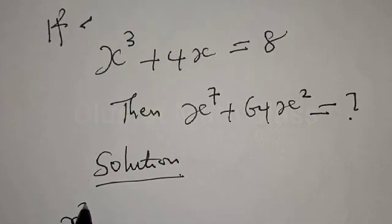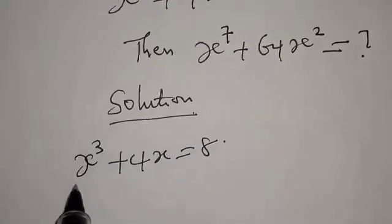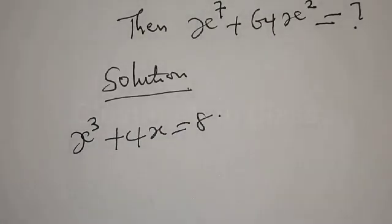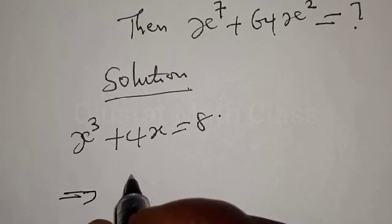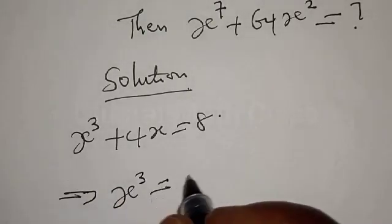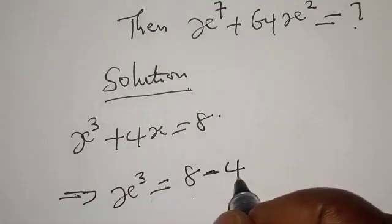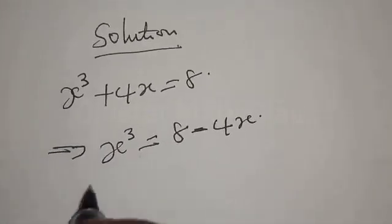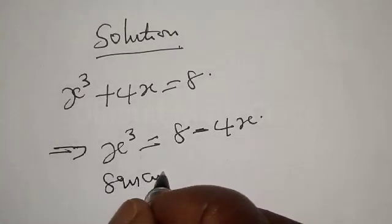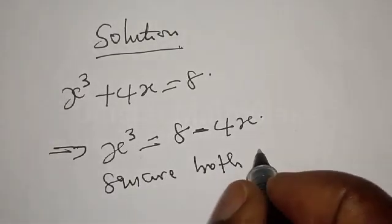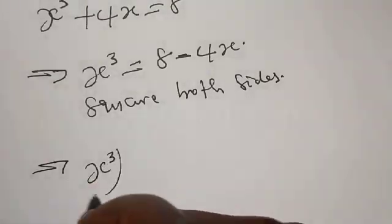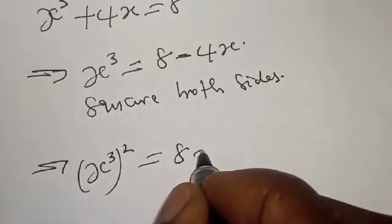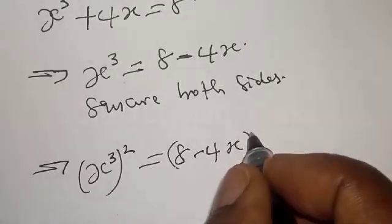We have x raised to power 3a plus 4s equal to 8. This implies that we have x raised to power 3a plus 4s equal to 8 minus 4s. Then let's square both sides. This implies that we have x raised to power 3a plus 4s equal to 8 minus 4s, squared.